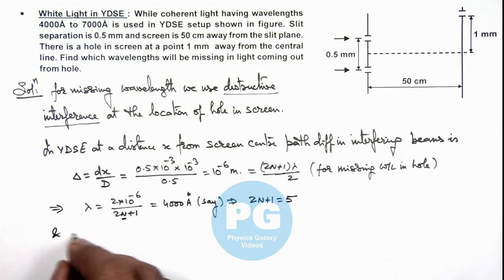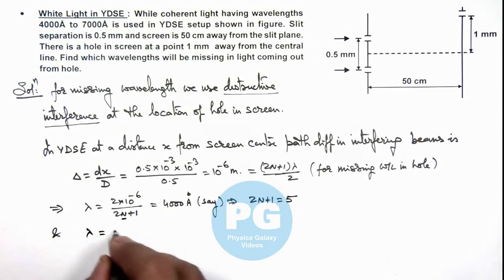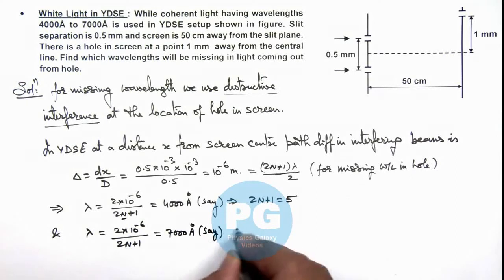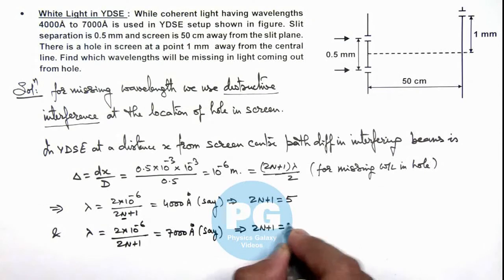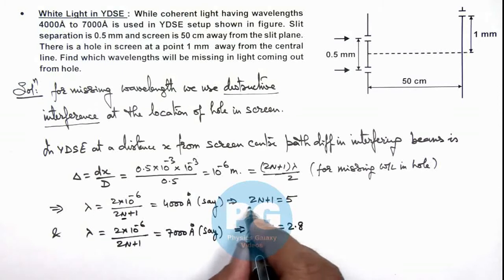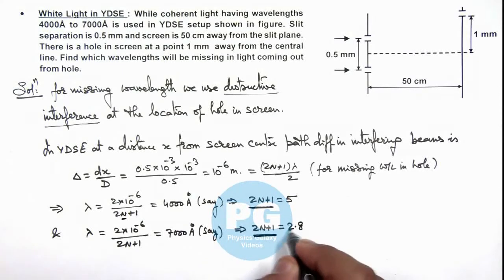And if lambda, which is 2 × 10⁻⁶ divided by (2n+1), is equal to 7000 angstrom, this implies the value of 2n+1 we are getting is 2.8. That means from 4000 to 7000 angstrom, this value of 2n+1, which is an odd integer, will vary from 2.8 to 5.